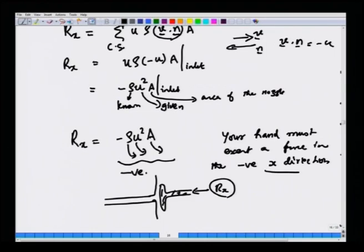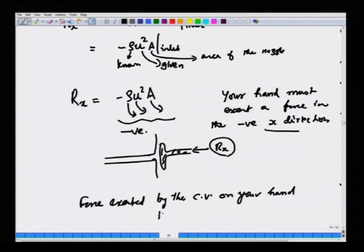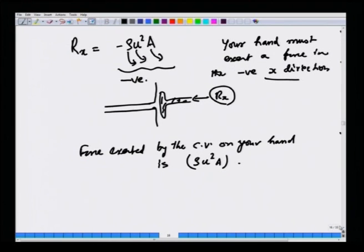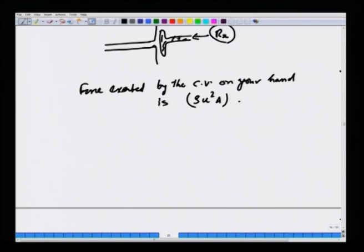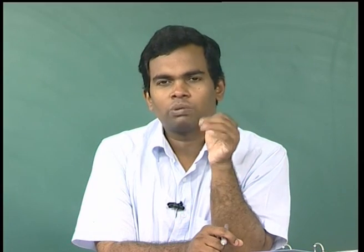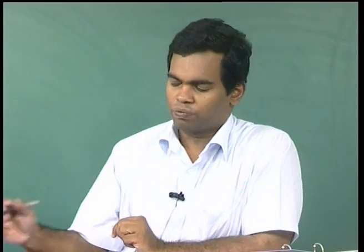The force exerted by the CV on your hand is the negative of Rx, which is rho·u²·A. This is a simple example of the application of integral momentum balance. We learned that whenever you have a free jet it is a very good assumption to treat it as having uniform velocity, and the pressure inside the jet is atmospheric when the jet is free — exposed to the atmosphere outside. Once you make this assumption it is very easy to use the integral momentum balance to calculate the force.